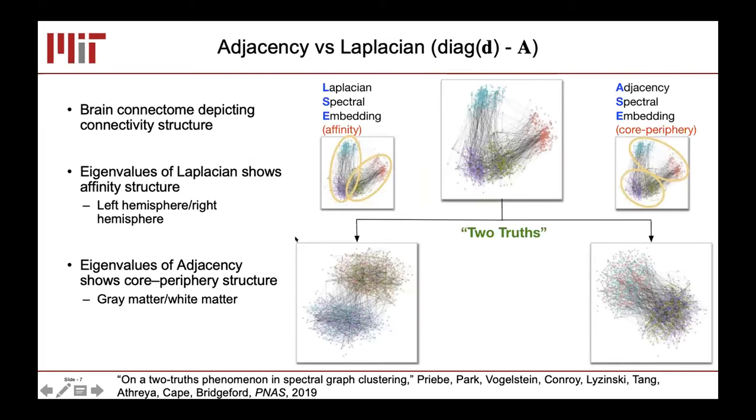Another very common representation is the Laplacian. The Laplacian is very close to the adjacency, except you imagine if every vertex has a number of edges connected to it, that's the degree, represented by vector D. We can create the Laplacian by taking the degree, putting it along the diagonal of a matrix, and subtracting the adjacency matrix. Both are very useful.